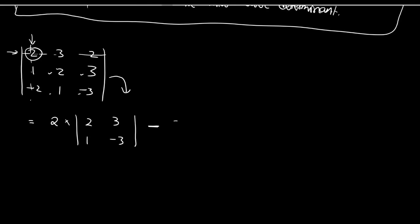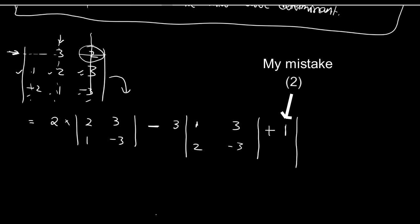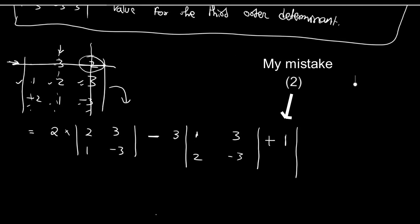We subtract the second element of the first row, which is 3, and exclude the second column and the first row. The remaining elements give the second order determinant 1, 3, −2, −3. Then we add the third element of the first row, which is 2, exclude the third column and first row, and the remaining elements give 1, 2, −2, 1.